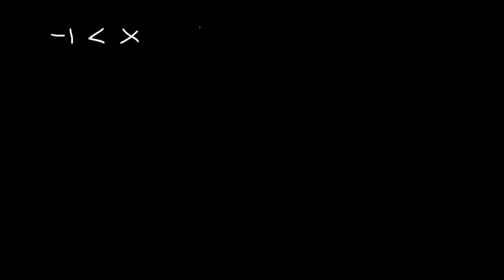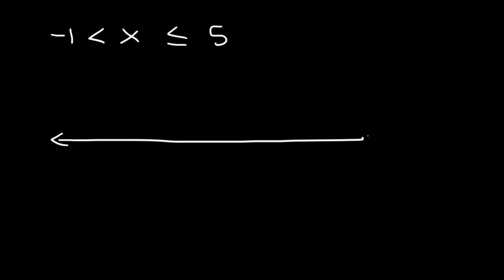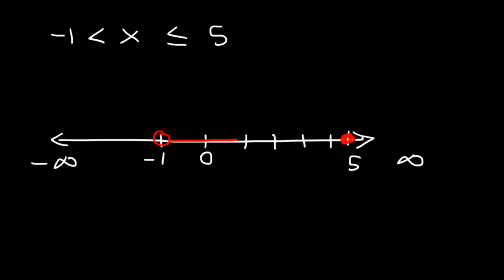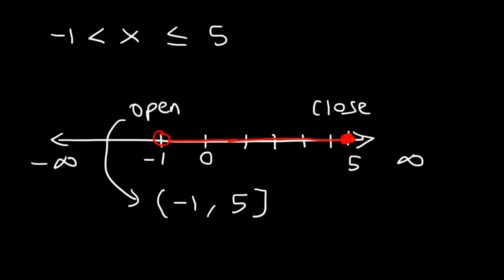Now let's move on to our next example. Let's say x is greater than negative 1 but less than or equal to 5. Go ahead and plot it on a number line. So here's 0, here's negative 1, and here's 5. So x is greater than negative 1: an open circle shaded towards the right. And it's less than or equal to 5: a closed circle shaded towards the left. To represent it in interval notation, it's between negative 1 and 5 — negative 1 to 5. We have an open circle at negative 1 so notice the parenthesis, and we have a closed circle at 5 so we need a bracket. And now you know how to graph inequalities.